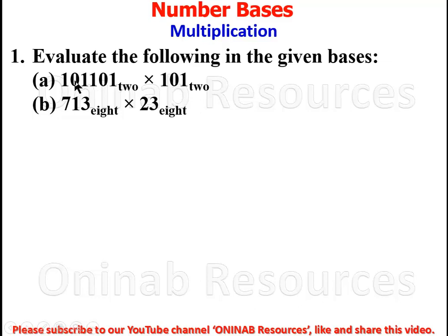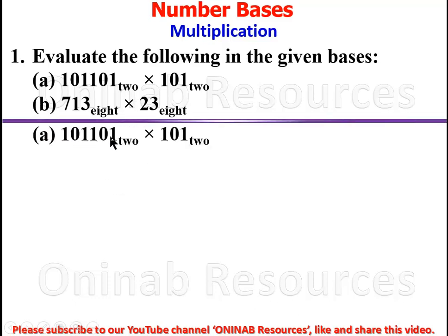We have 101101 base two times 101 base two, and part b: 713 base eight times 23 base eight. We start from part a of the problem.